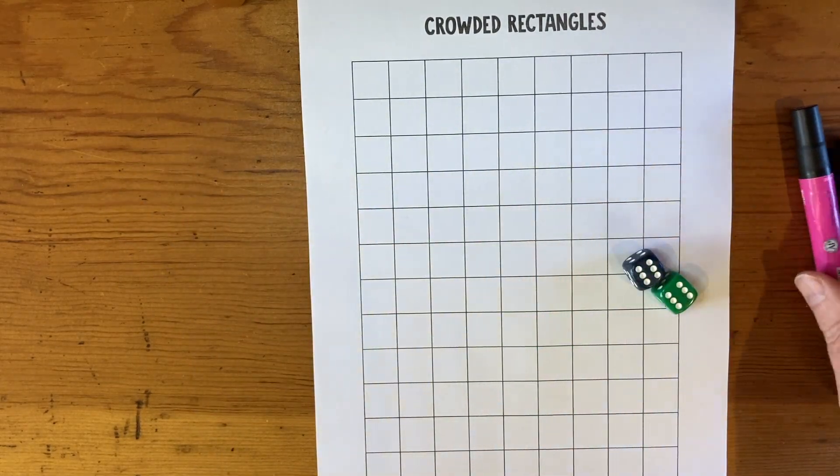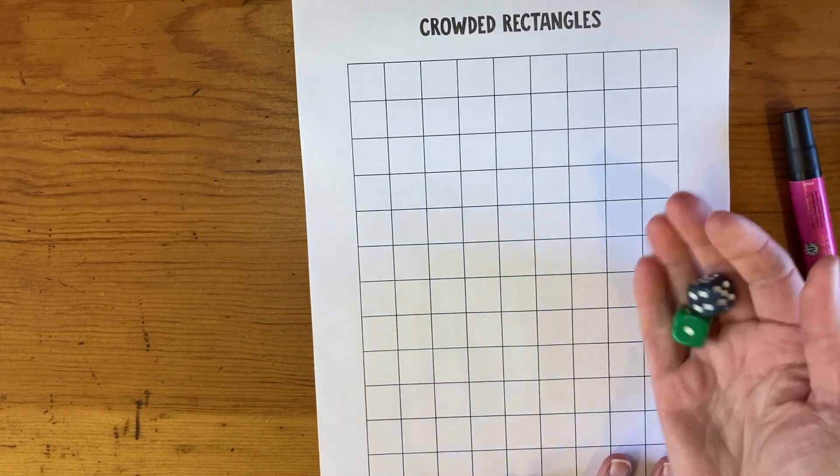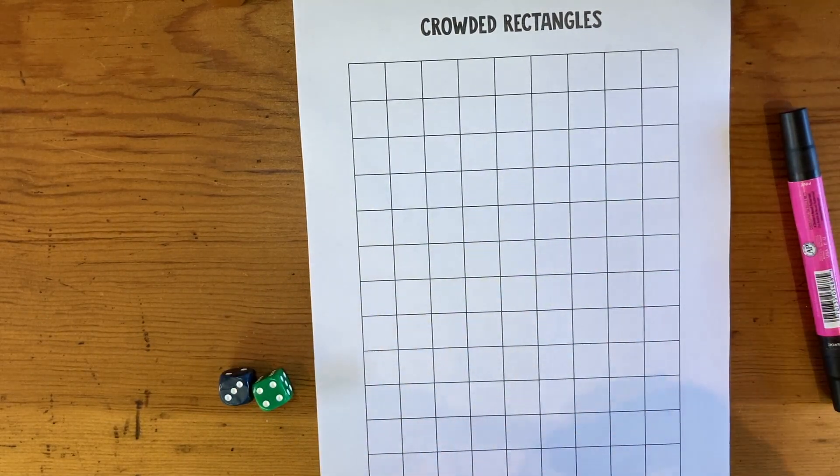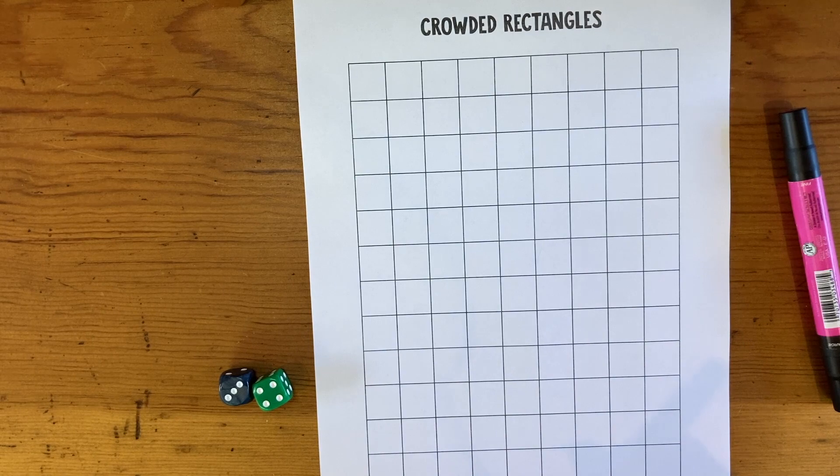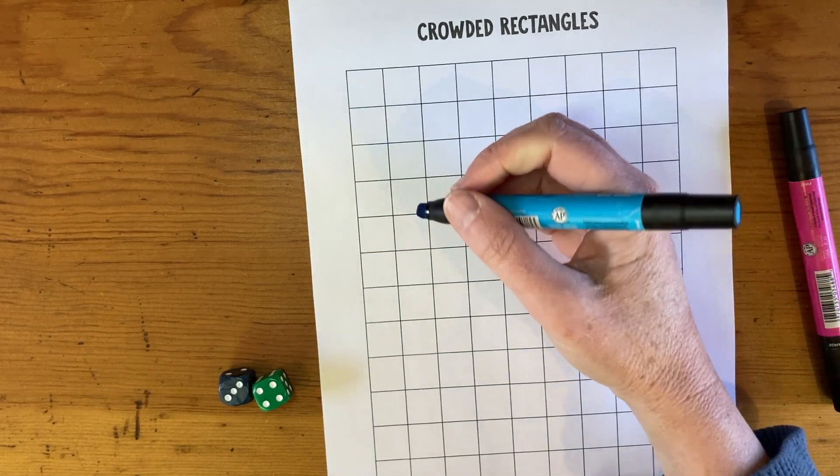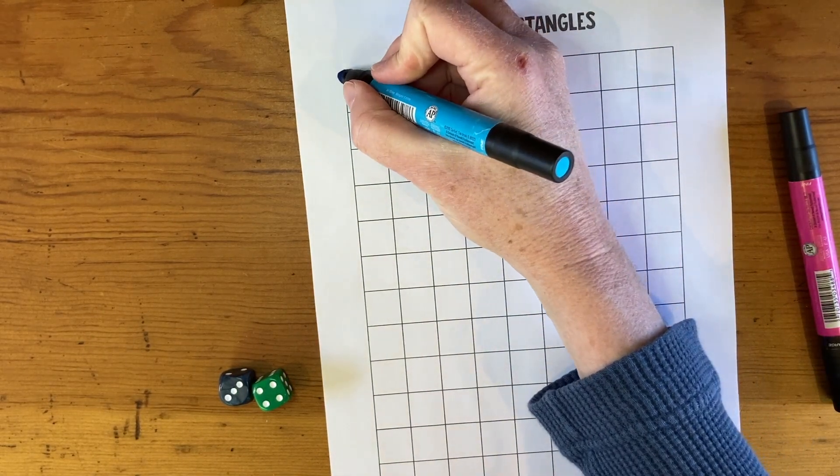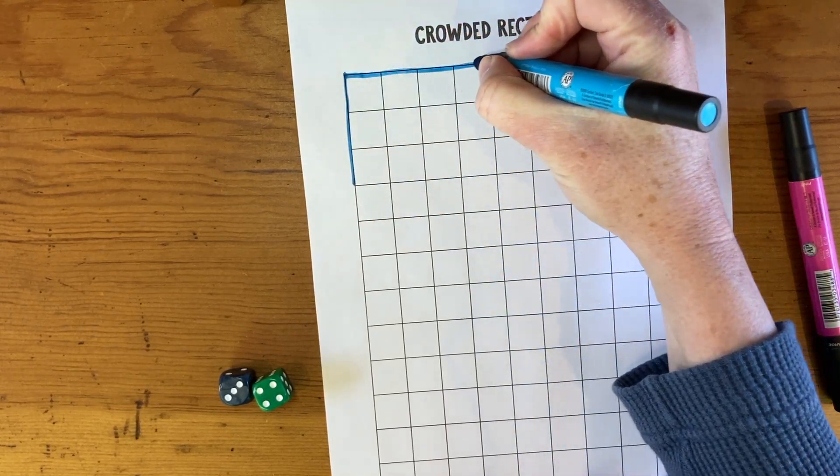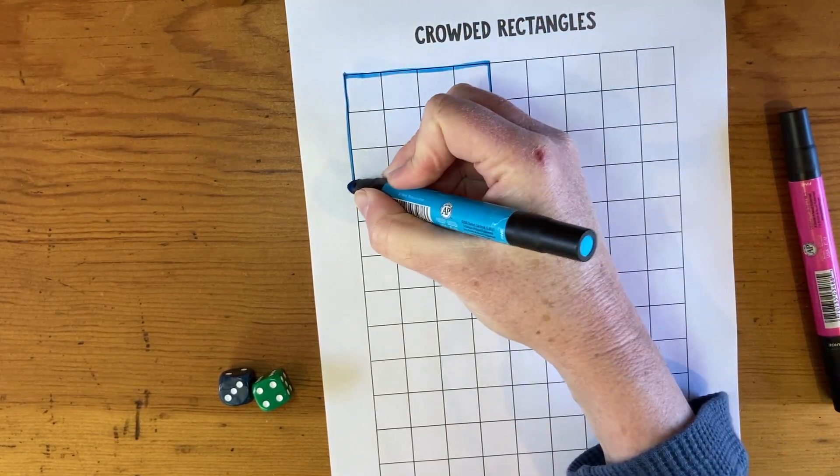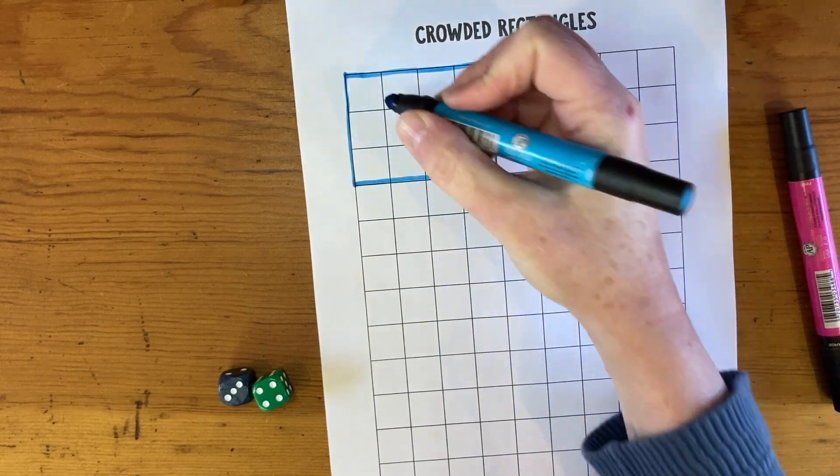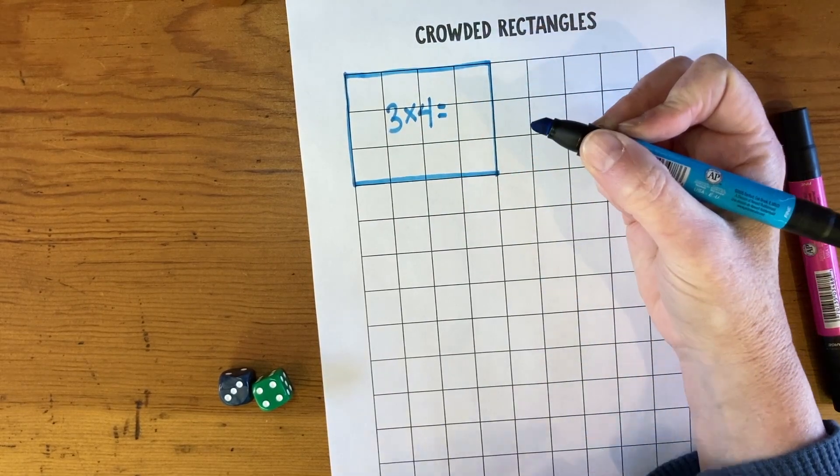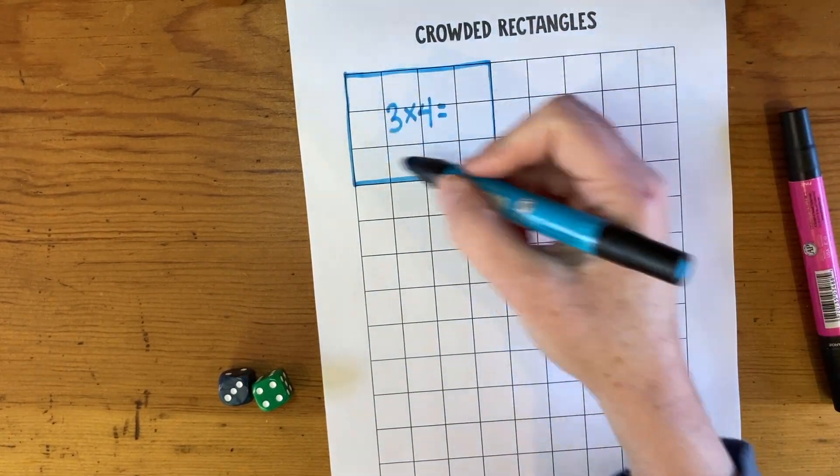The first player will roll. They got a three and a four, so we'll say that's player blue. They're going to make a rectangle that has three squares down and four squares across, and they're going to write the multiplication problem three times four.